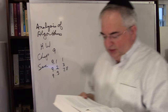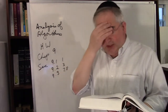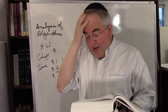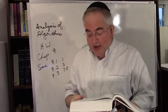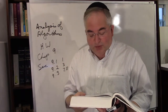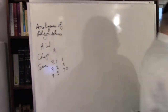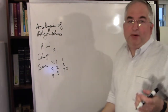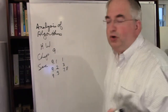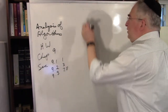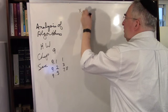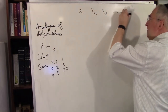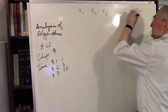This is section 9.1 number 1: show that the second smallest of n elements can be found with n plus log n minus two comparisons in the worst case. Basically, you do the tournament method. You have a bunch of numbers — x1, x2, x3, till xn.